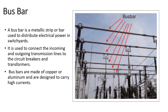A bus bar is a metallic strip or bar used to distribute electrical power in switchyards. It is used to connect the incoming and outgoing transmission lines to the circuit breakers and transformers. Bus bars are made of copper or aluminum and are designed to carry high currents.